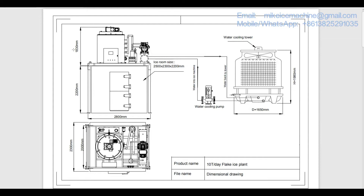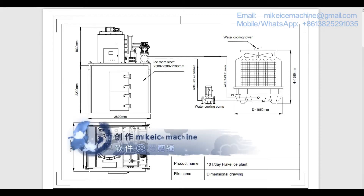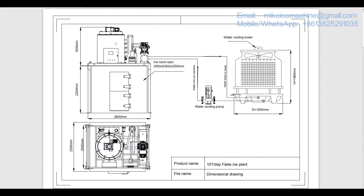This drawing shows a standard 10 ton per day flake ice plant. This machine can make 10 tons of ice flakes within every 24 hours. That capacity of 10 tons per day is based on working with 30 degrees Celsius ambient temperature and 20 degrees Celsius water inlet temperature.